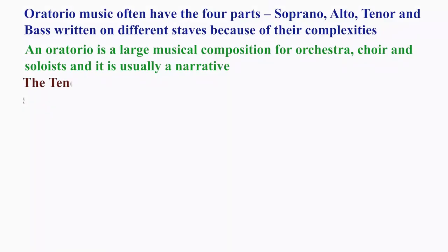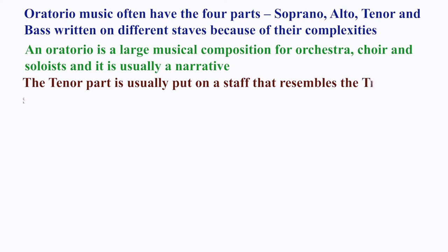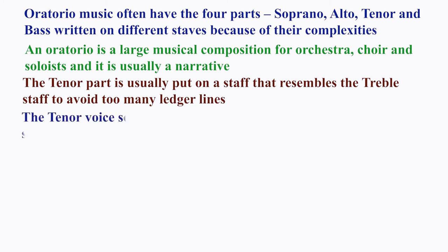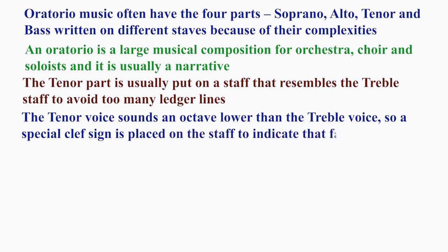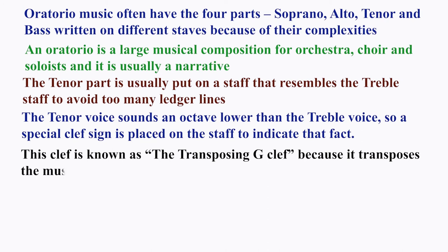Usually in these types of music, the tenor part is put on a staff that looks like the treble staff, because if placed on the bass staff there would be too many ledger lines. Since the male tenor voice sounds an octave lower than the treble voice, a special clef sign is used on the staff to indicate that the sound is intended to be an octave lower — that it is not the treble staff per se. That clef is known as the transposing G clef, because it transposes the music to a lower register.